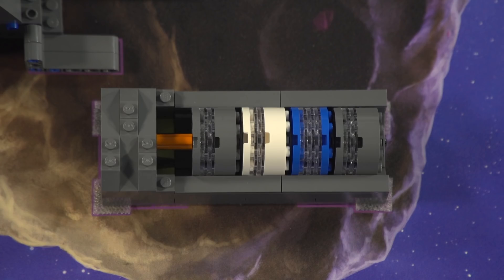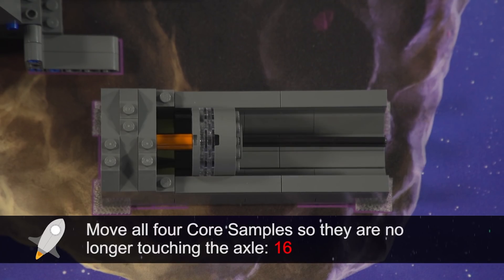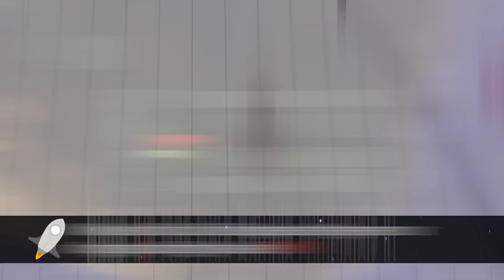The robot needs to get all the core samples out of the core site model. Then it has options for what to do with them, as described here and in Mission 3.